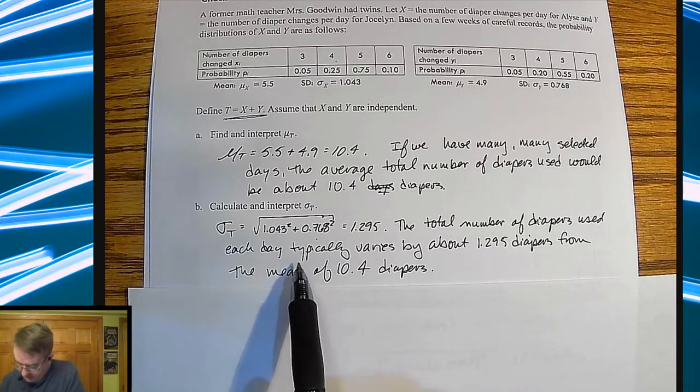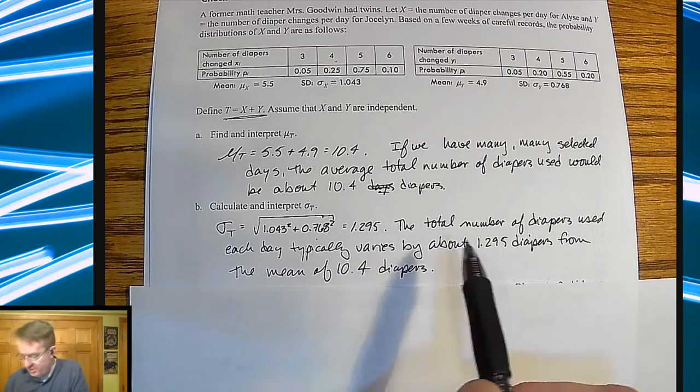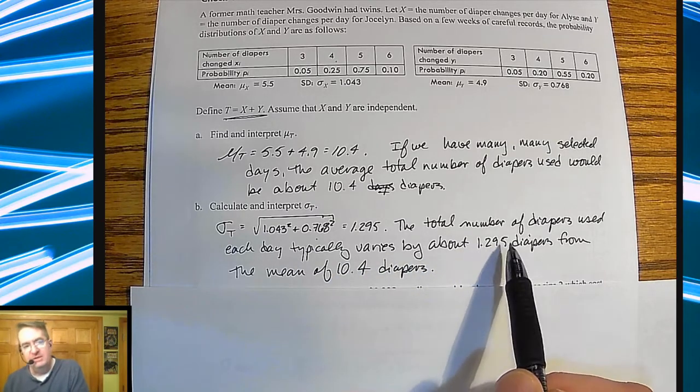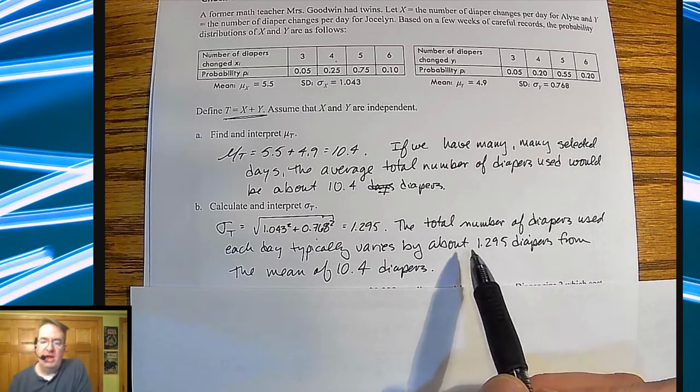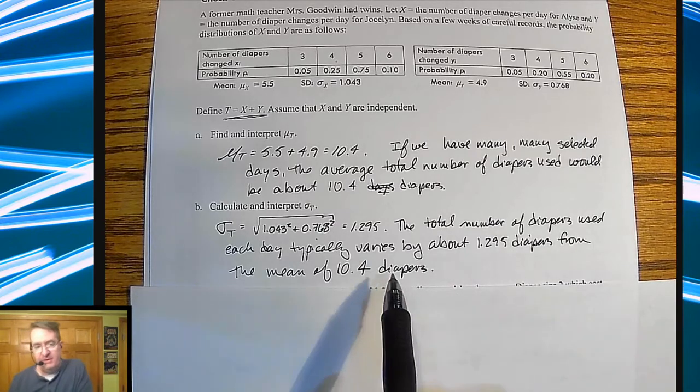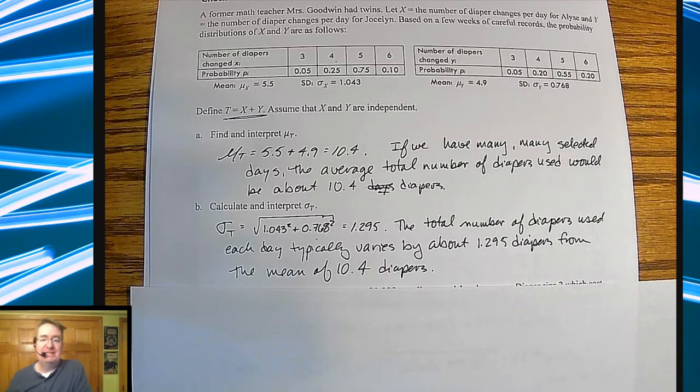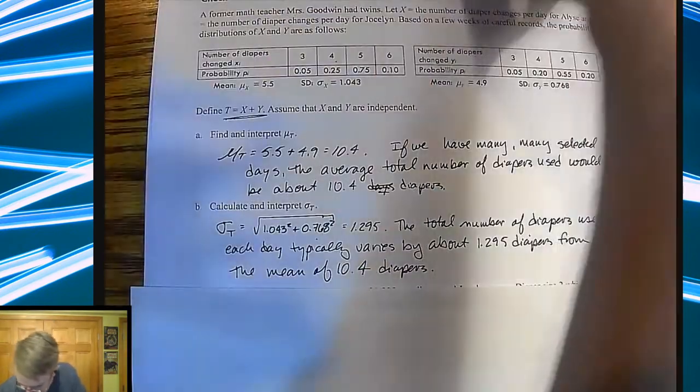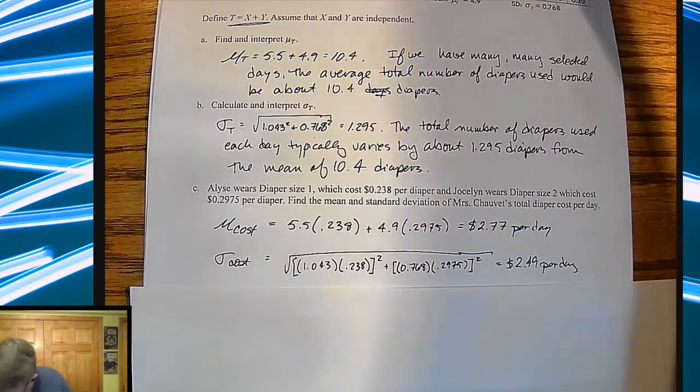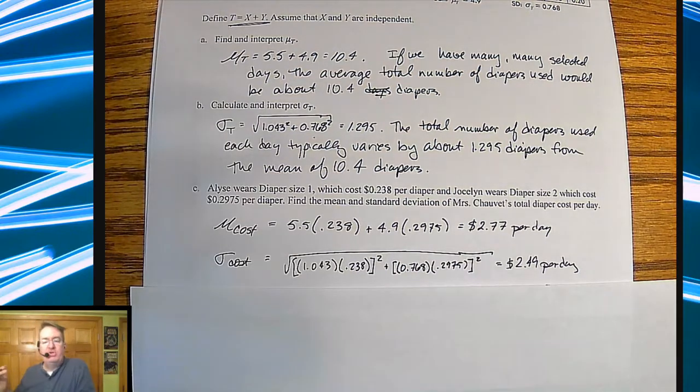Now a couple of things to remember, you do have to say typically varies, you use the phrase about here because this is not a precise number, and you always refer what it is varying from, the mean, and then state what the mean is. Do you have to? Only if you want full credit.